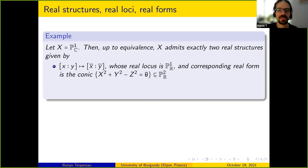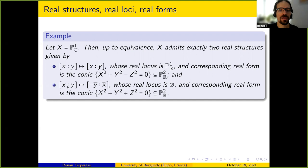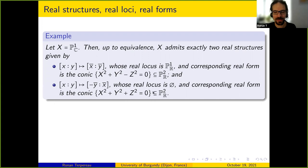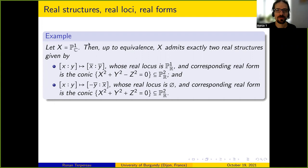The corresponding real form for the second structure is the so-called empty conic — empty because there are no real points, but it's still a nice real projective scheme of dimension one. Up to equivalence there is nothing more, which is easy to check from the fact that the automorphism group of P^1 is PGL2.